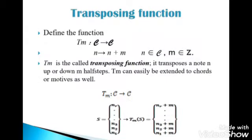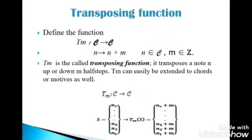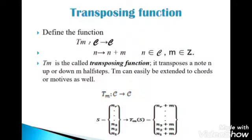If n is a chromatic scale, any element is n. For example, this is the Transpose function.